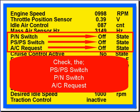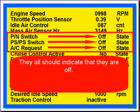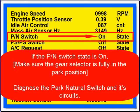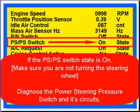You also want to check the PSPS switch — that's the power steering pressure switch — the park neutral switch, and the AC request switch. They should all indicate off. If the park neutral switch is on, make sure the gear selector is fully in the park position, then diagnose the park neutral switch and its circuits. If the power steering pressure switch state is on, make sure you're not turning the steering wheel, then diagnose the power steering pressure switch and its circuits.